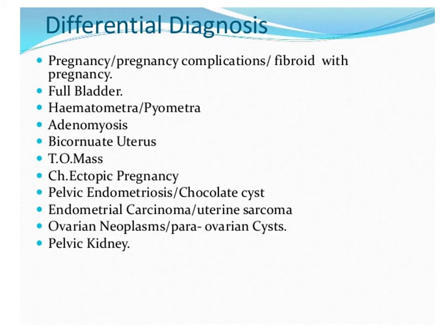Tubo-ovarian masses on either side can present as a mass and must be differentiated from a fibroid. Chronic ectopic pregnancy also produces a mass, but differentiating features include history of amenorrhea, irregular bleeding, and tenderness. Pelvic endometriosis and chocolate cysts also present similarly, but endometriosis typically has a history of severe dysmenorrhea far more prominent than the bleeding.